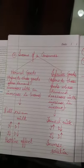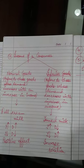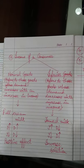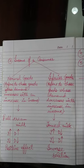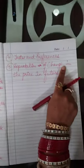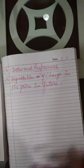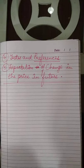So, the five factors affecting demand that we have studied are: first, own price of a commodity; second, change in price of related goods; third, income of a consumer; fourth, taste and preferences; and fifth, expectation of change in price in future.